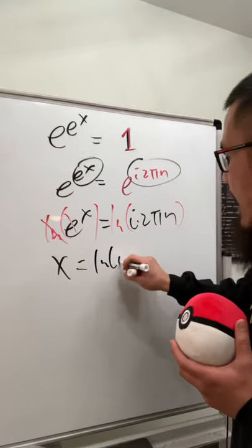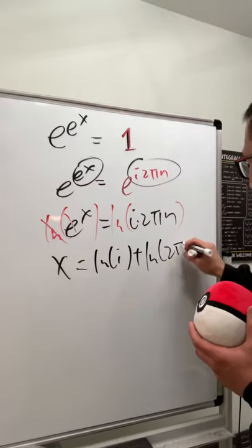And you see this right here is the same as ln i plus ln of this, which is 2 pi n.